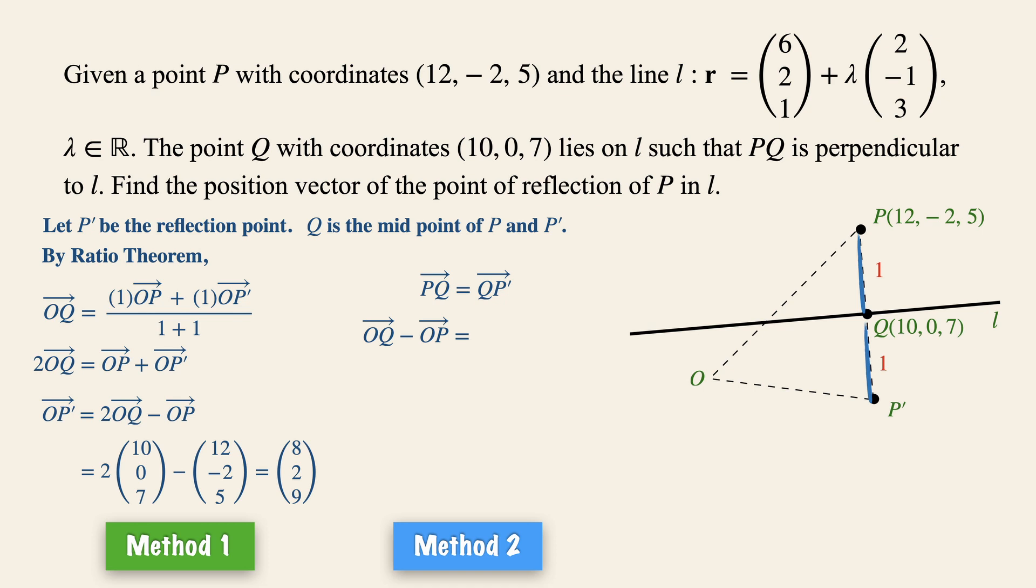And vector QP' equals OP' minus OQ. Similarly, let's make vector OP' the subject by substituting the known values given in the question. Vector OP' is thus (8, 2, 9).